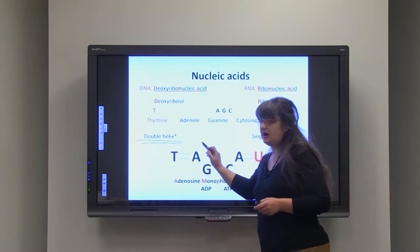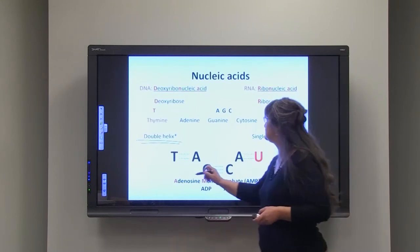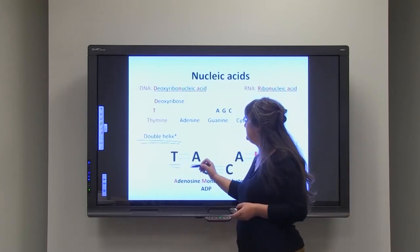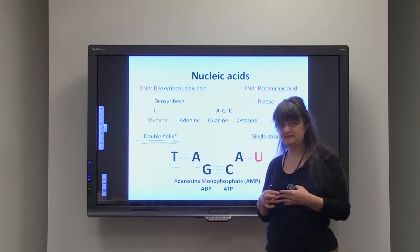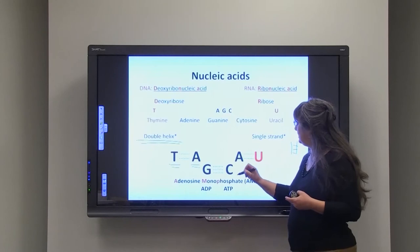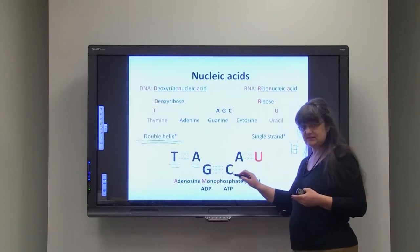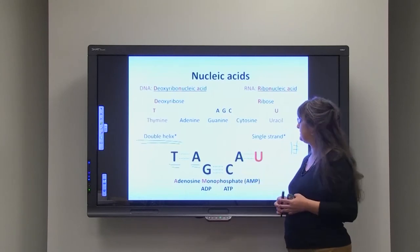This is how they are pairing. Thymine and adenine are forming two hydrogen bonds between them. Guanine and cytosine are forming three hydrogen bonds between them.